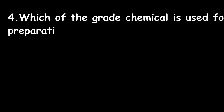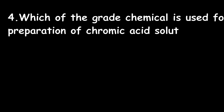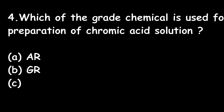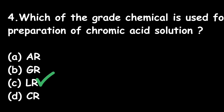Question 4: Which grade of chemical is used for the preparation of chromic acid solution? Option A: AR; Option B: GR; Option C: LR; Option D: CR. The right answer is Option C — LR, or Laboratory Reagent grade.